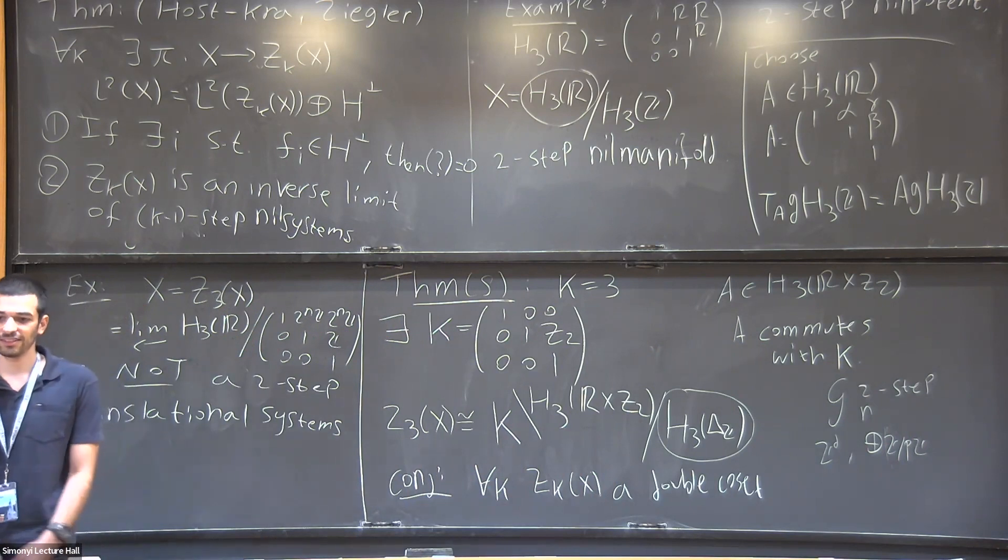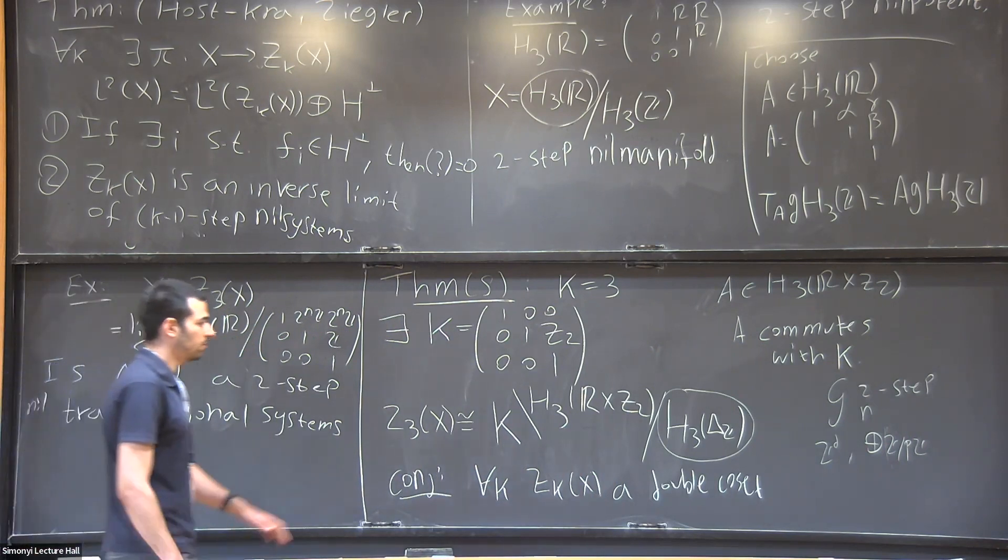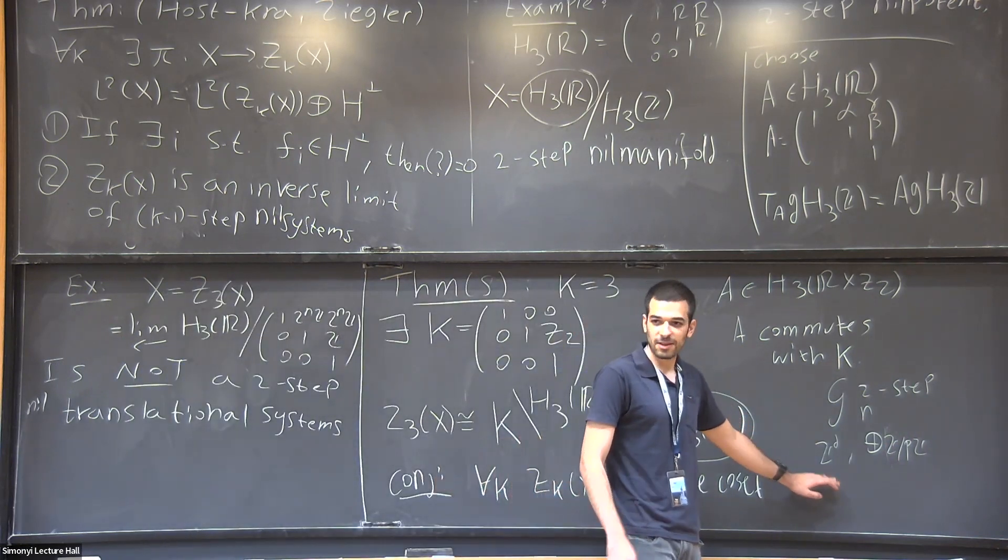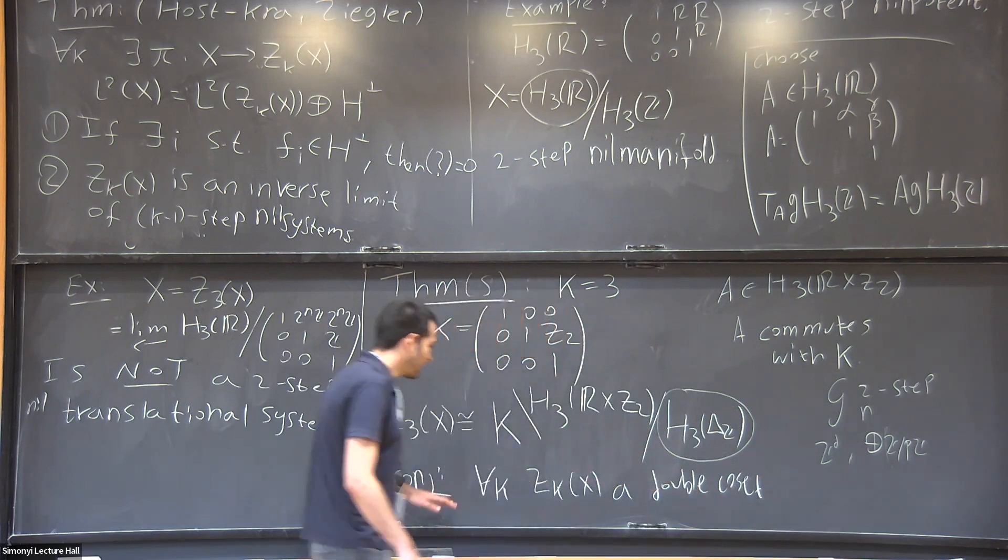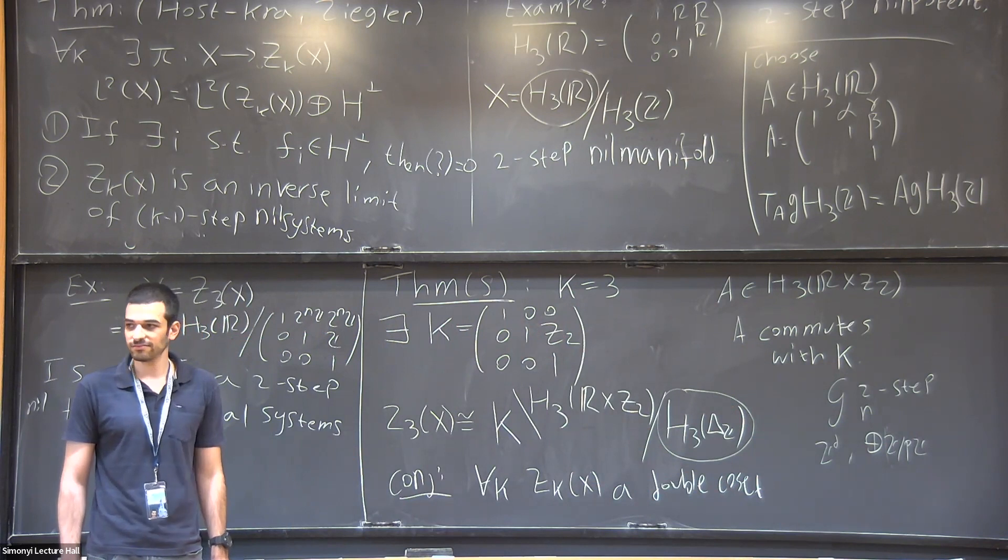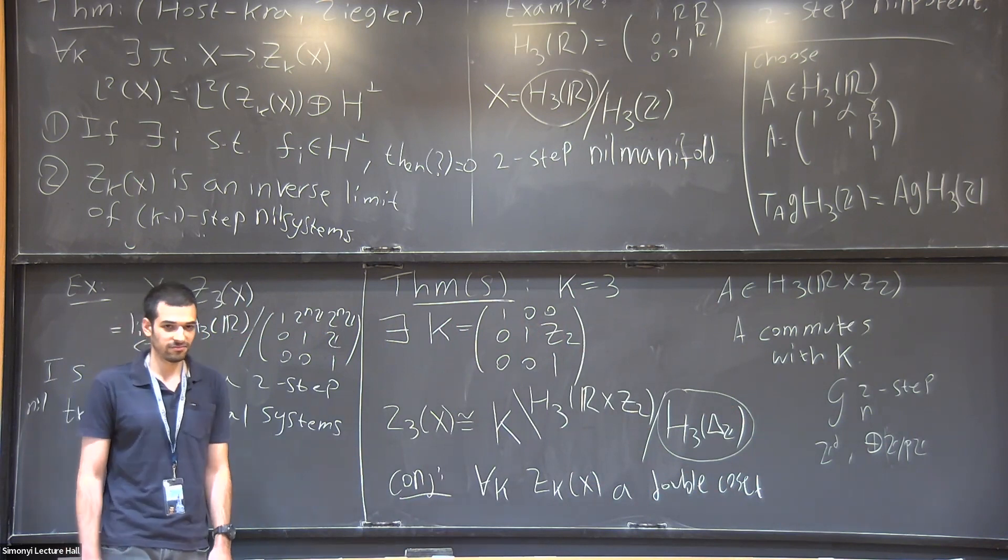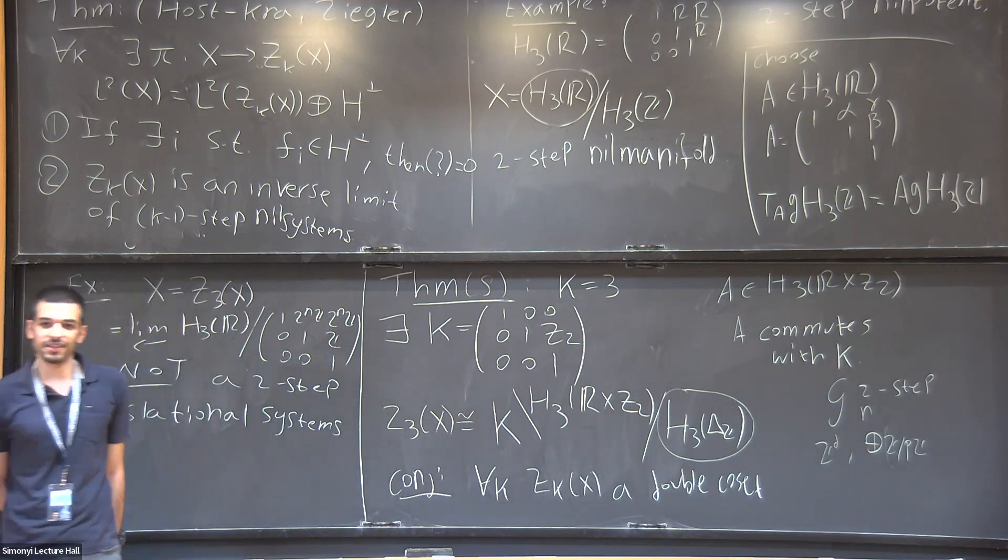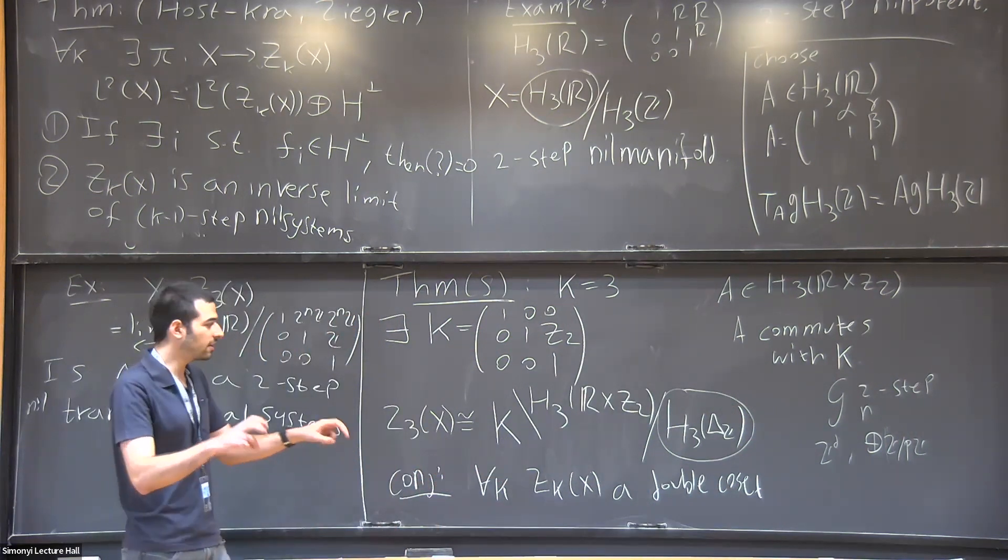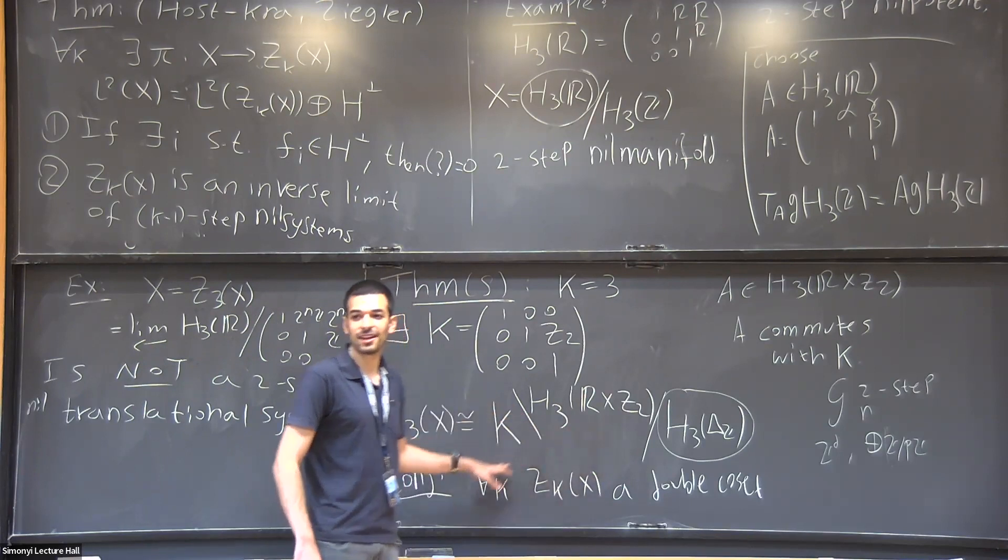And we have some partial results when k equals 4. So, in particular, you know the answer to this conjecture for Z actions? So, for Z actions, Gutman, Manners, and... maybe Valoo, maybe not. I'm not sure, actually. They prove that it is a double coset. But they use the Host-Kra theorem. They actually show that all the inverse limits of nilsystems are double cosets.